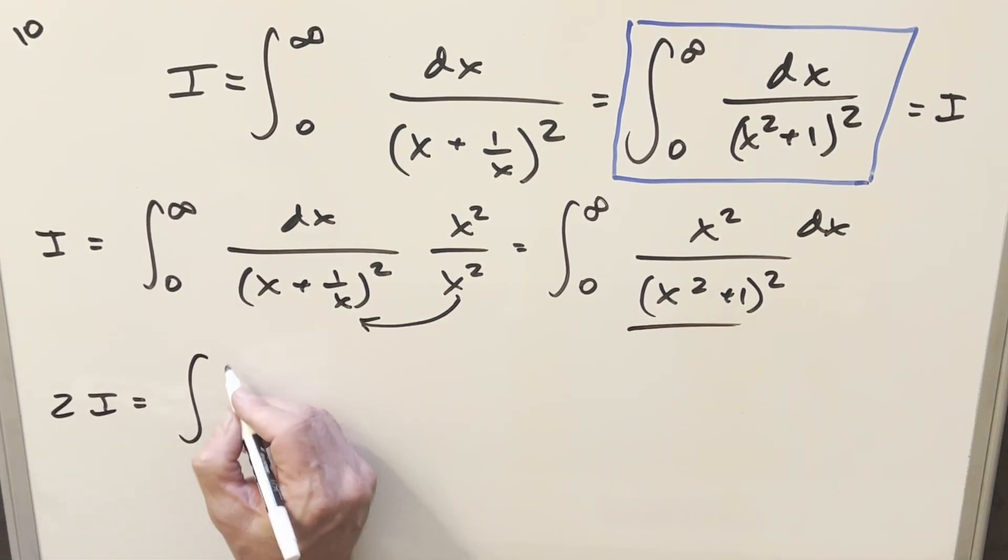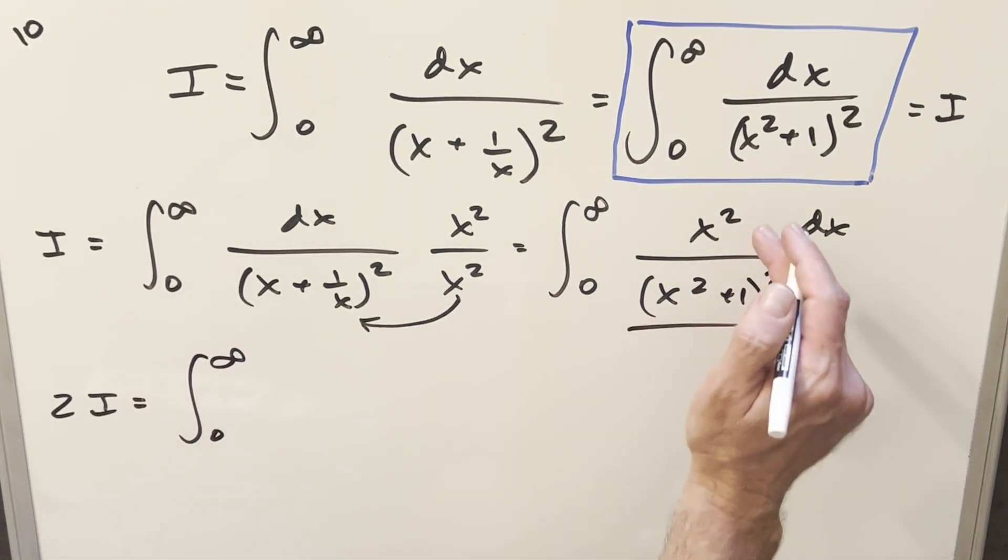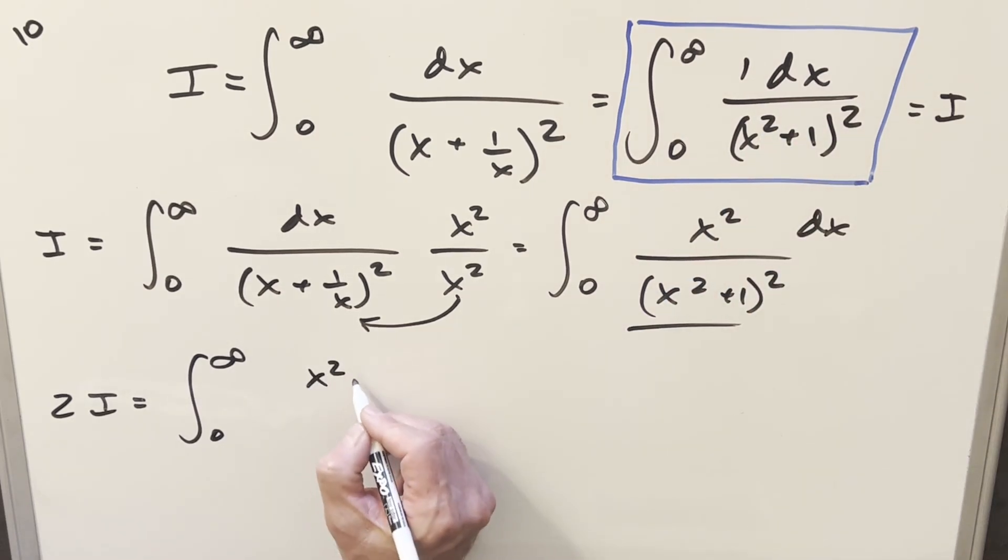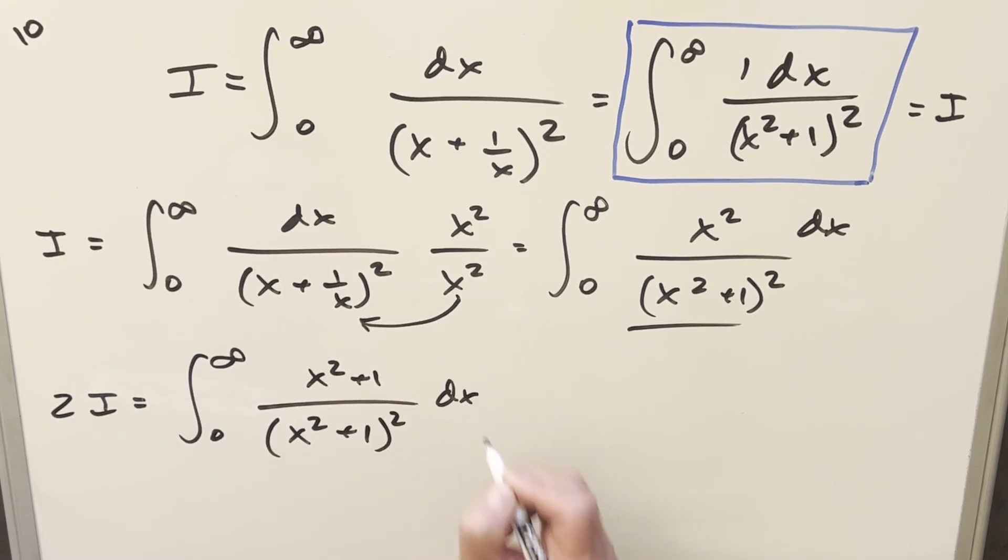the denominators are already the same, the bounds are the same. We add it, we have a one here. So now what's going to happen is our numerator becomes x squared plus one over x squared plus one all squared dx.